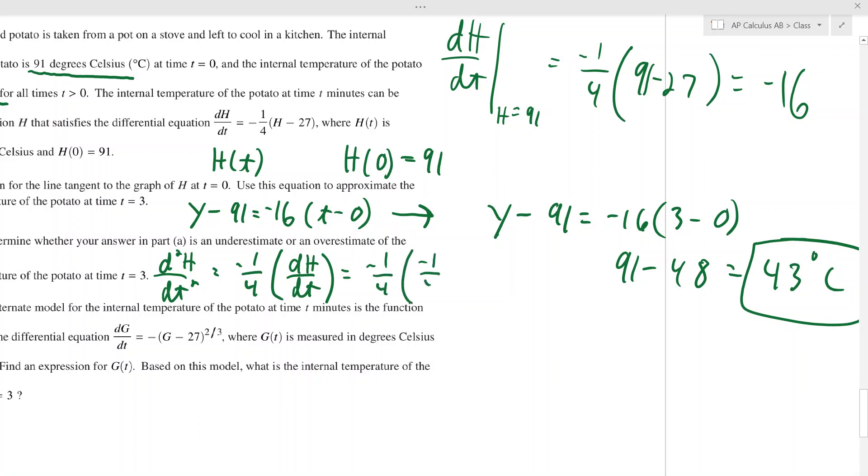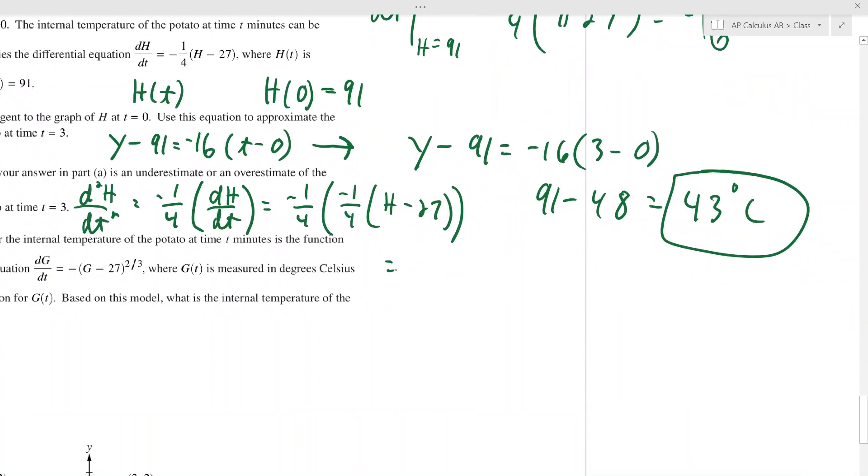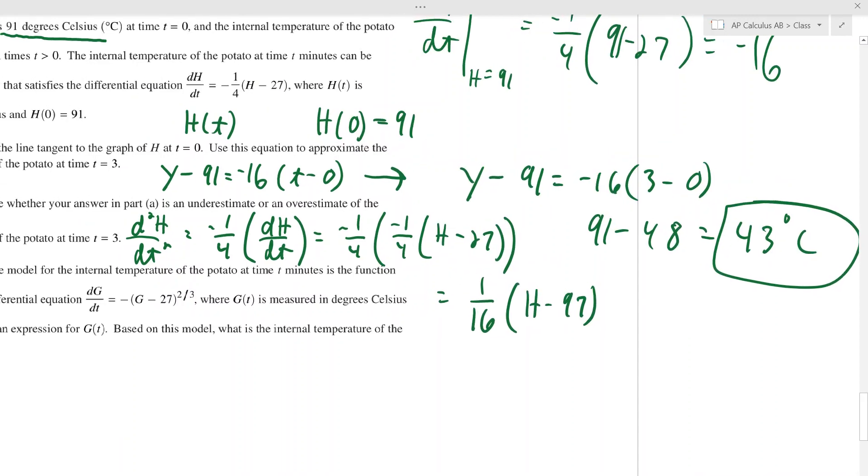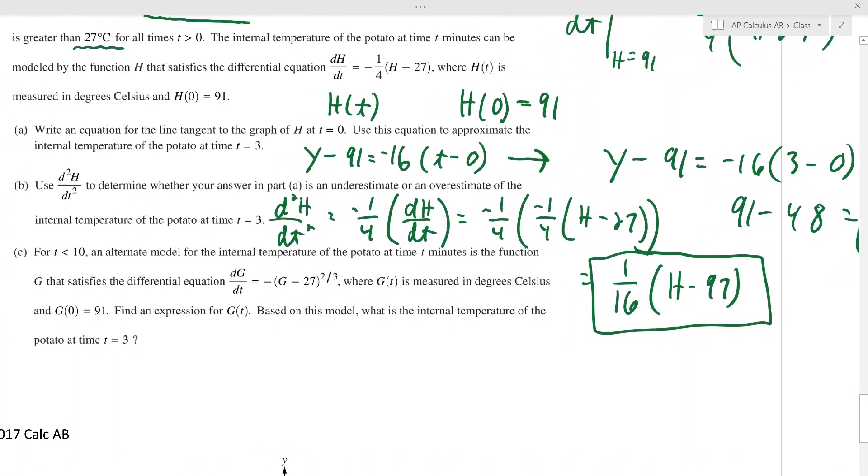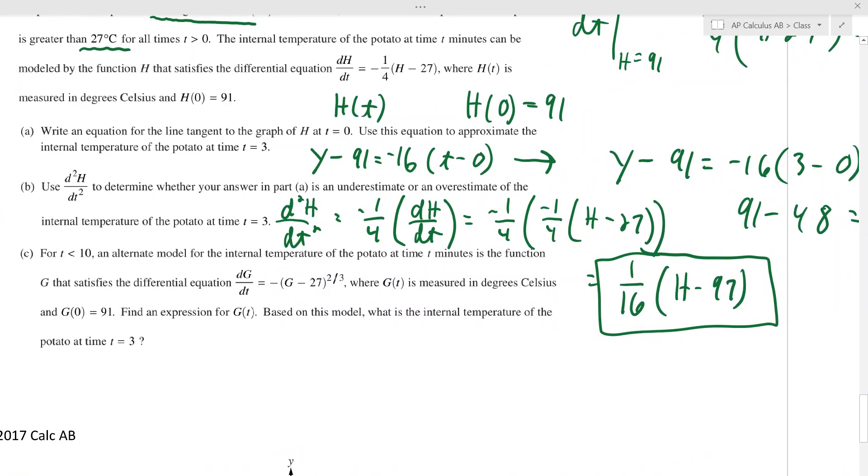That is the second derivative, but we're going to plug in what dh/dt is. And you'll notice that we've done a handful of these, and they're all very similar. So the second derivative is actually positive 1/16 times h minus 27. So the second derivative is just this thing right here, but it also depends on h. And they want to know, was our estimate an over or underestimate?